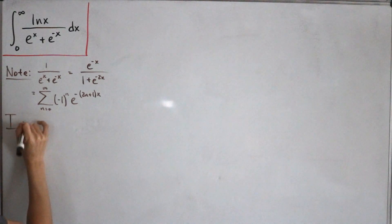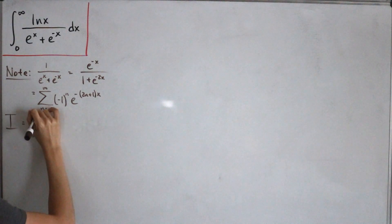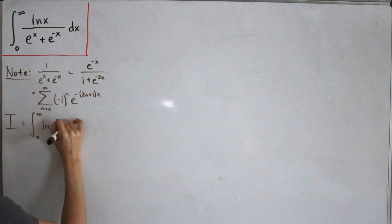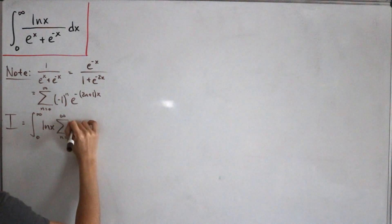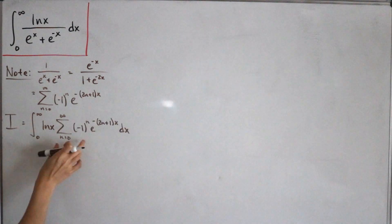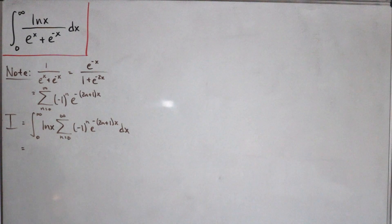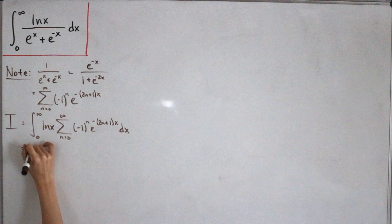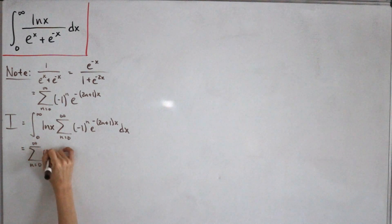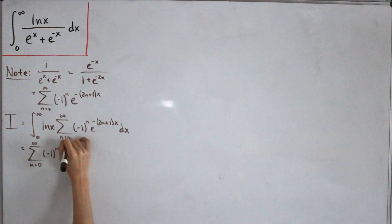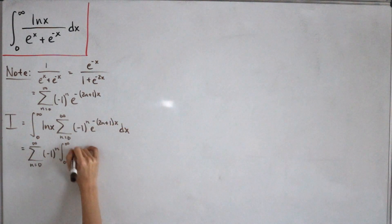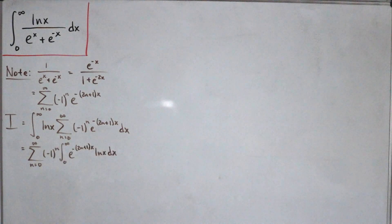Calling the entire integral capital I, we substitute the series in: from 0 to infinity, ln(x) times the infinite sum from n=0. By convergence, we can switch the integral and summation. Since (-1)^n is constant in x, it moves outside, giving us the alternating sum first, then the integral from 0 to infinity of e^(-(2n+1)x) · ln(x).